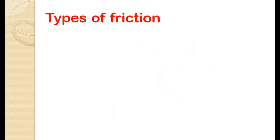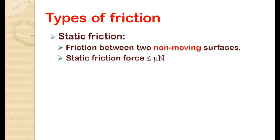So static friction is the friction which occurs between two non-moving surfaces. It is the friction that exists between a stationary object and the surface on which it's resting.